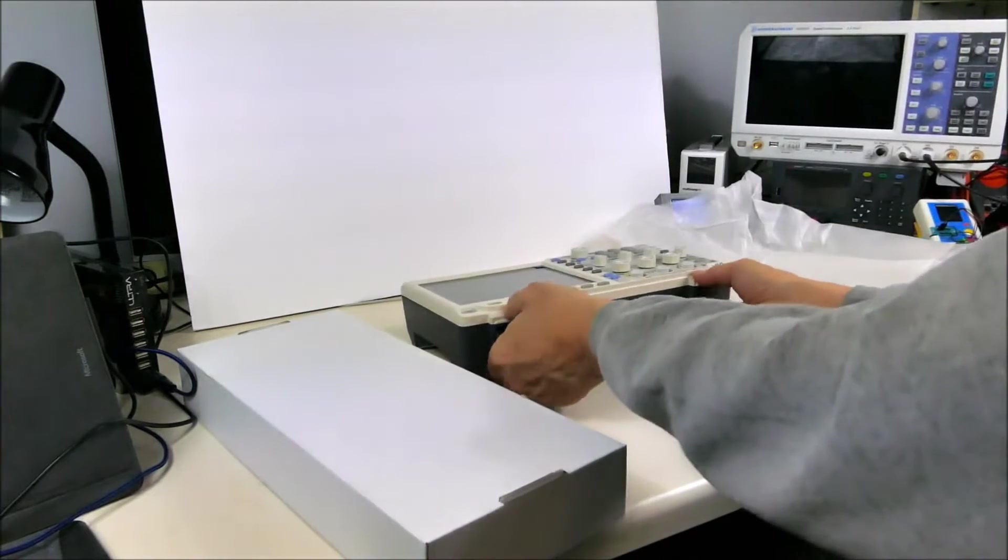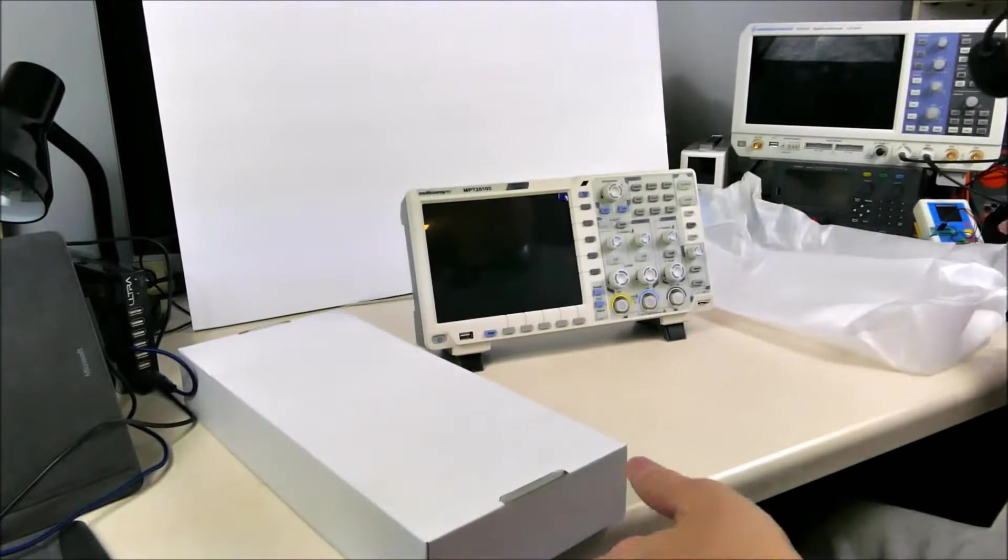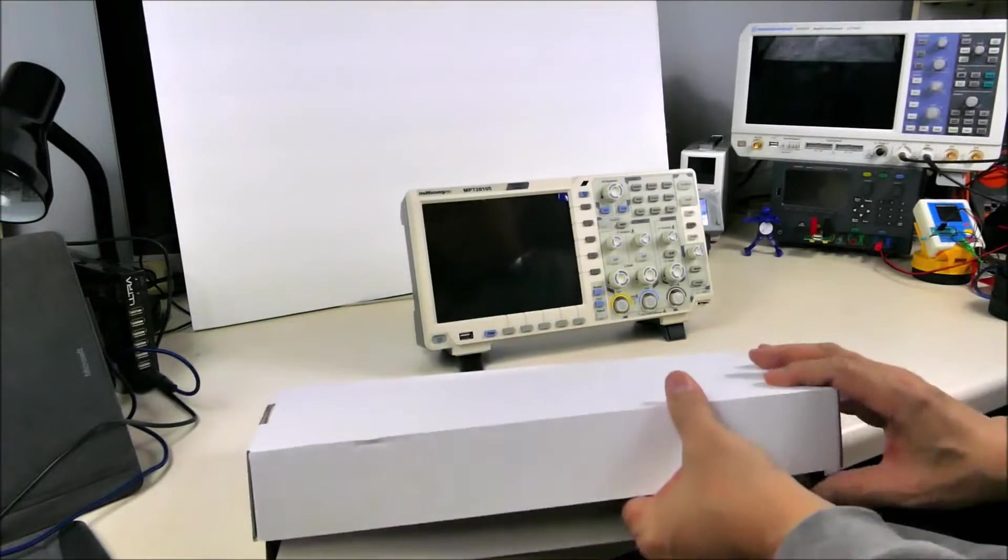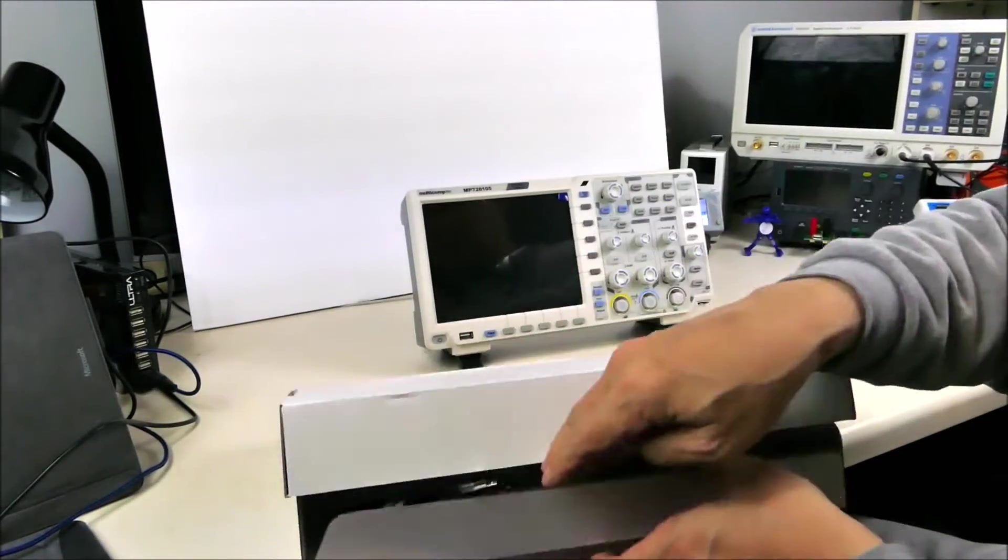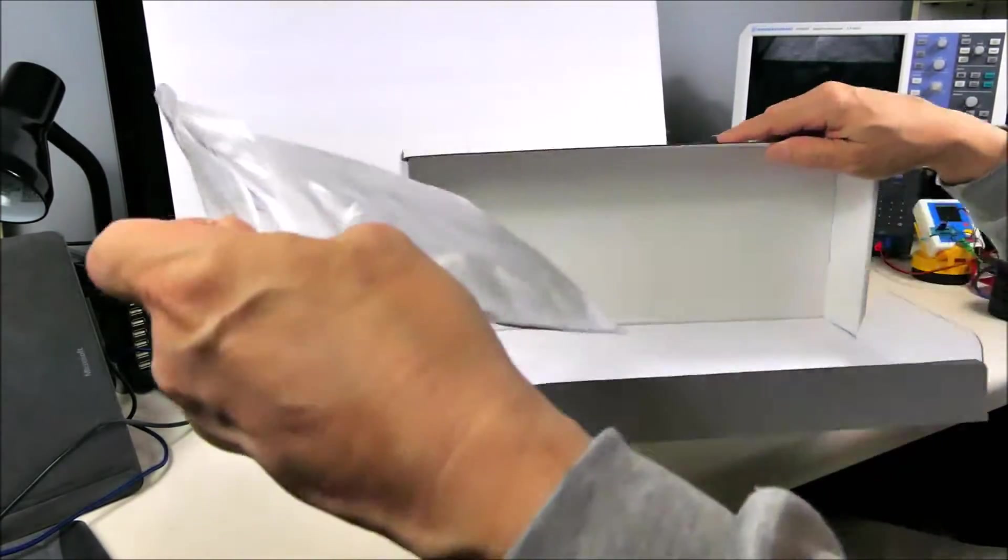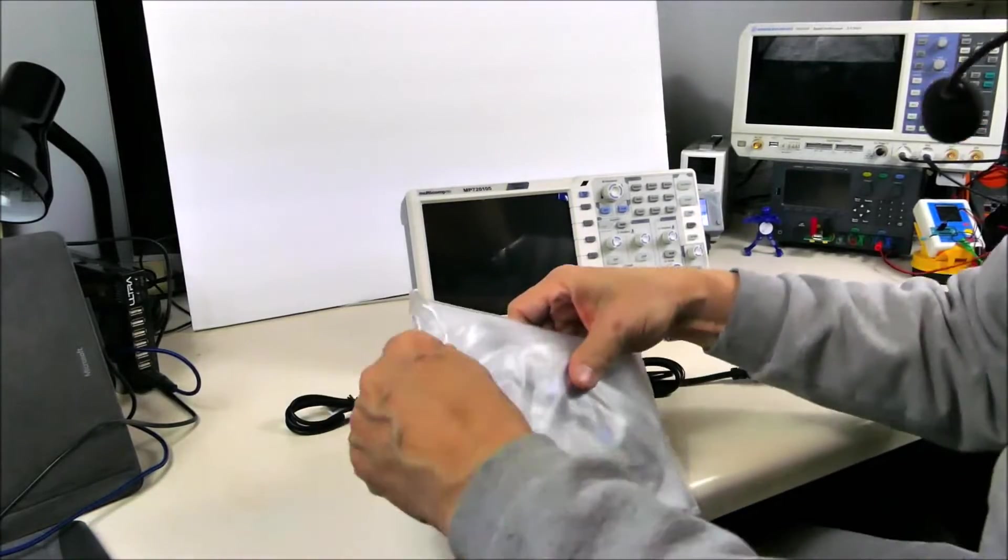We've got feet that allow it to tilt up, and what else is in here? Okay, we've got power cord, USB cable, and probes in a nice plastic envelope.